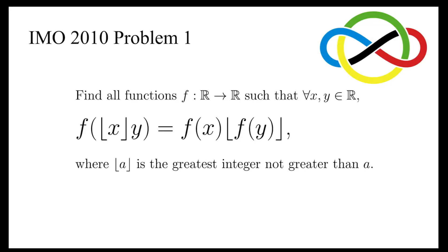Let's take a look at this problem taken from the IMO 2010. It says find all functions f that maps the set of real numbers to itself, such that for all real numbers x and y, f of the floor function of x times y equals f of x times the floor function of f of y.